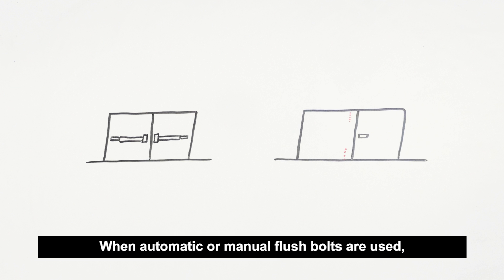When automatic or manual flush bolts are used, no hardware may be mounted on the inactive leaf that would indicate to the building occupant that the inactive leaf could be used for egress.